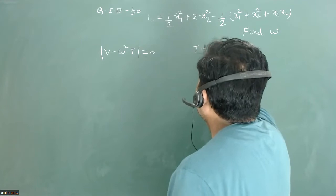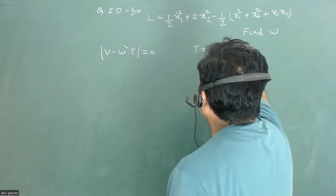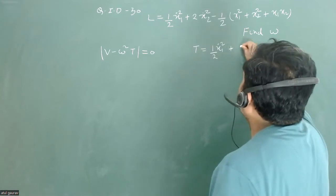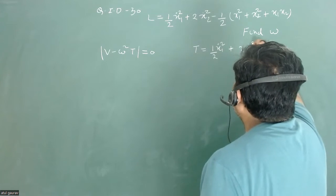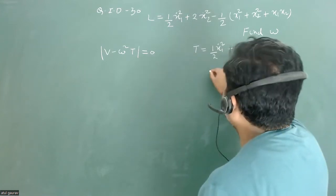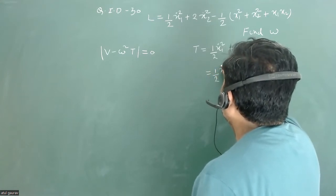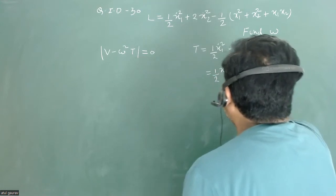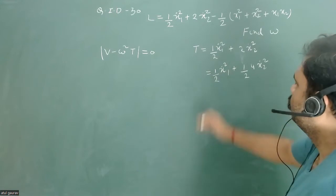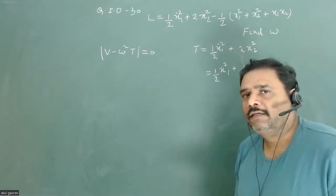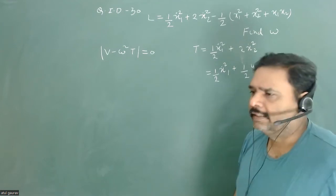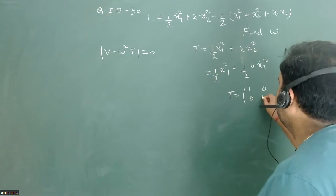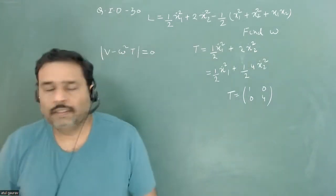The kinetic energy is half x1-dot squared plus half times 2 times x2-dot squared, where m equals 1 in this problem. We can write this as half x1-dot squared plus half times 4 times x2-dot squared. Only diagonal terms appear, and looking at the coefficients of the generalized coordinates, the kinetic energy matrix T is: [1, 0; 0, 4].